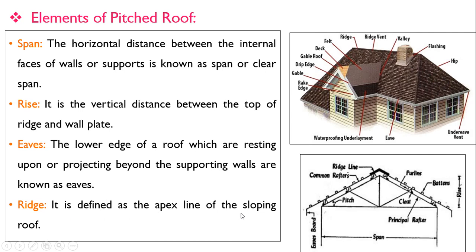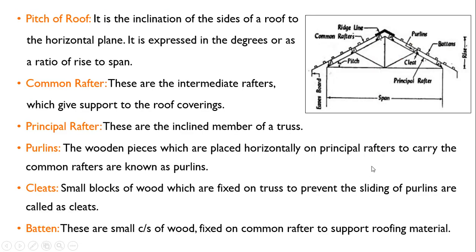Ridge is defined as the apex line of the sloping roof, also called the ridge line. Pitch of the roof means the inclination of the sides of a roof to the horizontal plane. It is expressed in degrees or as a ratio — the ratio of rise to span — and this is called the pitch.